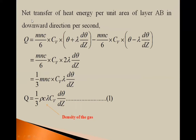We calculate the net transfer of heat energy for unit area of layer AB in the downward direction per second by taking the difference: Q = (mnc/6)·Cv·(θ + λ dθ/dz) − (mnc/6)·Cv·(θ − λ dθ/dz). After simplification this gives Q = (mnc/6)·Cv·2λ(dθ/dz) = (1/3)mnc·Cv·λ(dθ/dz).